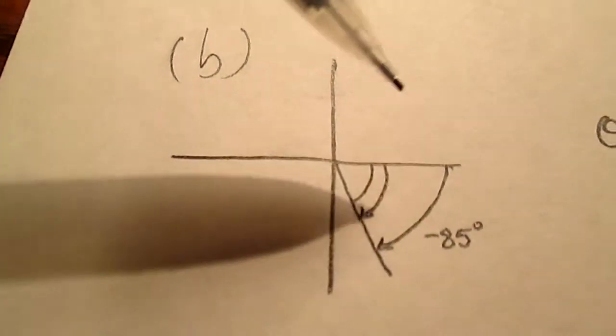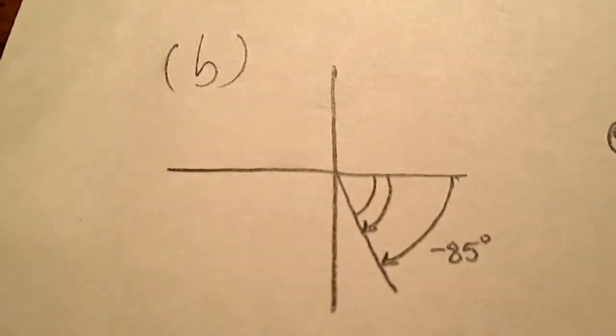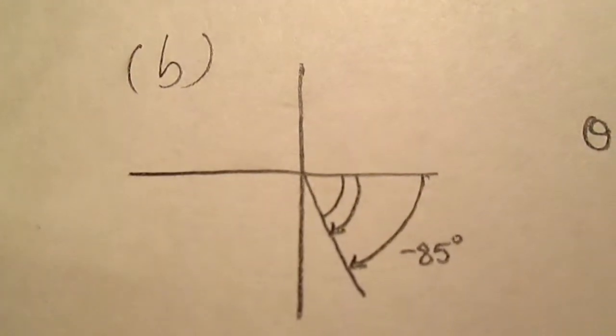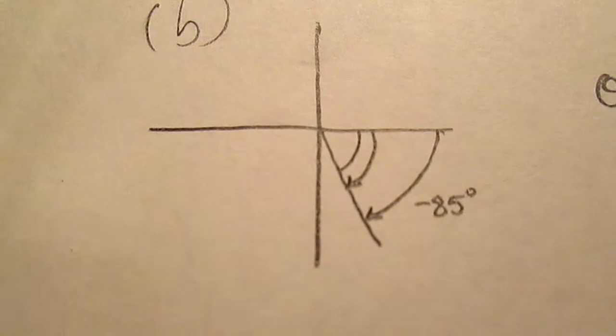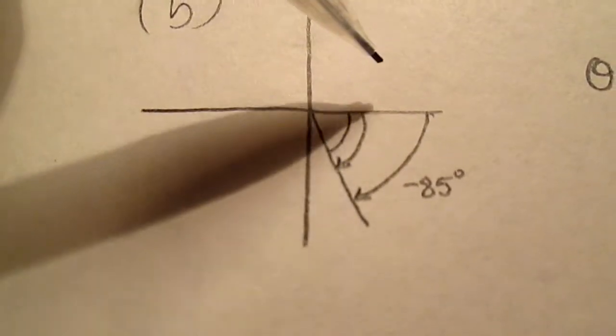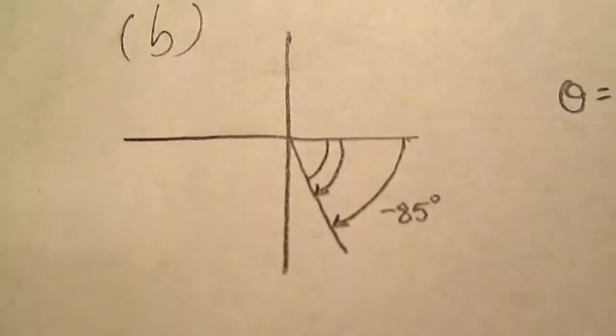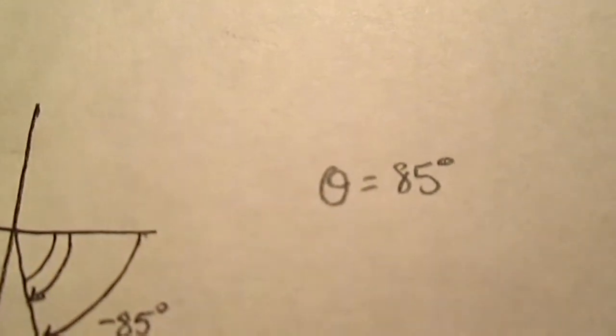For b, you have to map where it is on the unit circle, which is going negative 85 degrees, which is in the fourth quadrant. To go back to zero, you would just go back 85 degrees, so the reference angle is just 85 degrees.